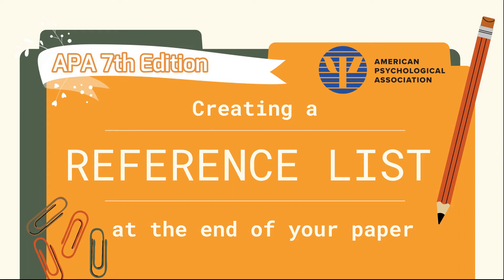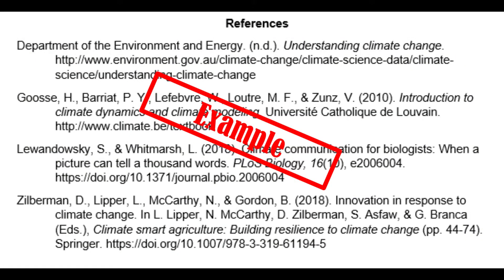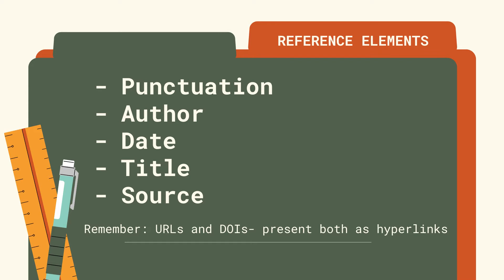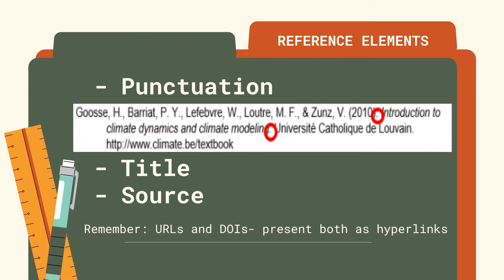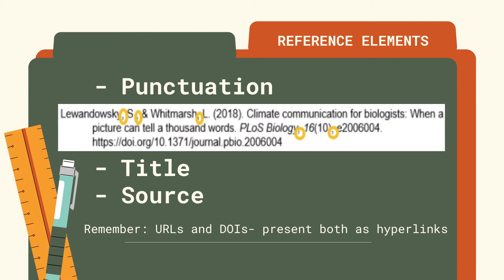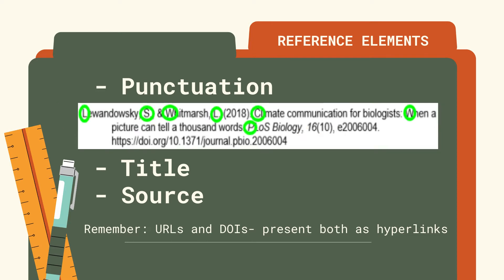Your references contain all the sources you have used in your paper, so readers can easily find what you have cited. It can be found on the last page of the paper. Your entries must be arranged in alphabetical order. The reference page has elements. In terms of punctuation, use a period in between reference elements, use commas to separate parts of an element, and capitalize the first letter of the titles, subtitles, and proper names.